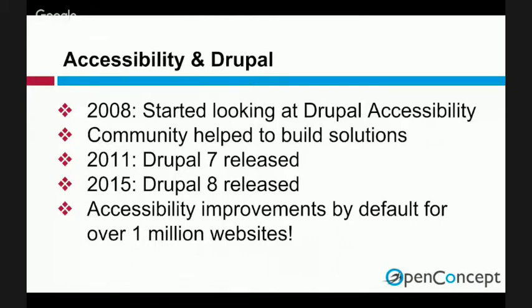We learned a lot through that process. I didn't know all that much about web accessibility back in 2008, but by 2011 I had talked to many people in the Drupal, design, and accessibility communities and was able to learn and contribute a lot back. In 2011 we released Drupal 7, which was the most accessible content management system available at that time. But we didn't catch everything — security, accessibility, and performance are things you can spend infinite time on and never fully complete. We've made further improvements between Drupal 7 and Drupal 8.